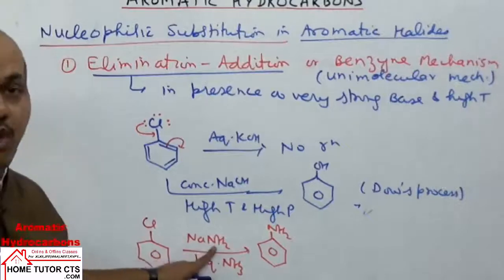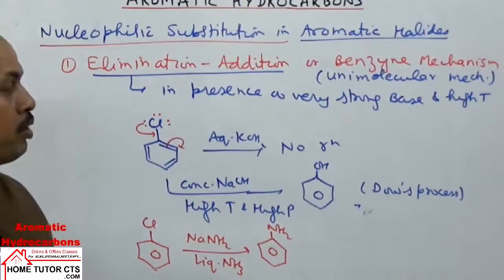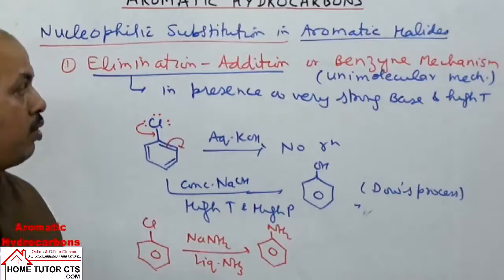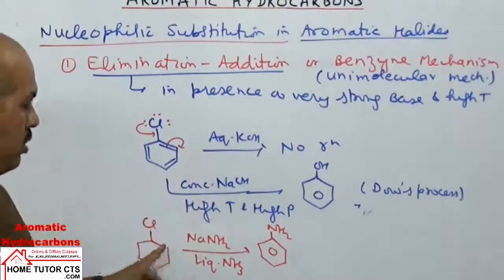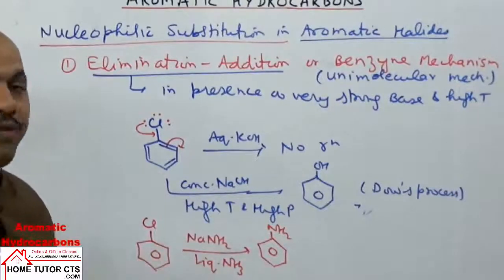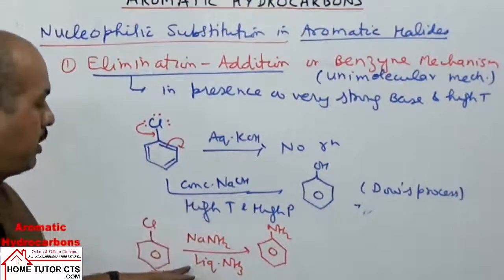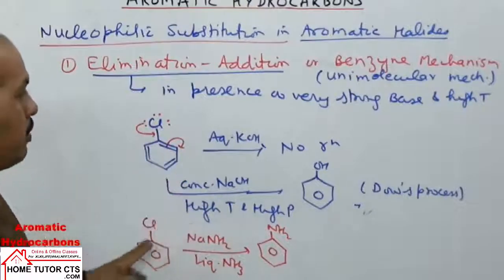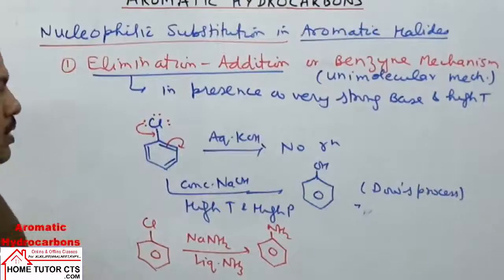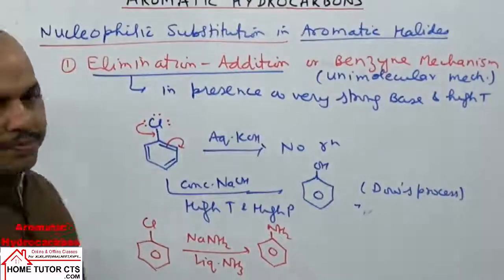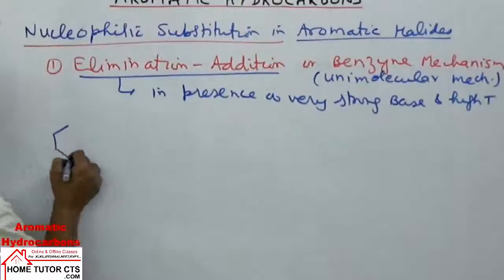To favor the elimination-addition mechanism or benzyne mechanism (unimolecular mechanism), the reactant should have a halogen atom and a very strong basic medium. In a strong basic medium, the reaction can occur by this benzyne mechanism. Let us now see the benzyne mechanism step by step.